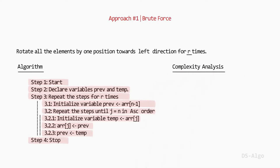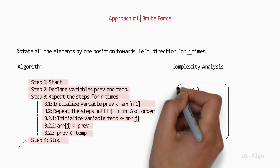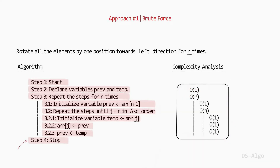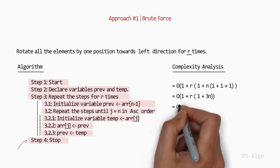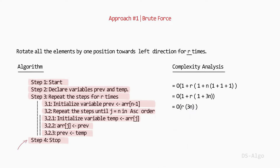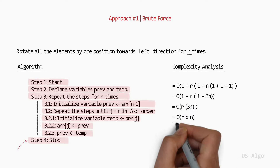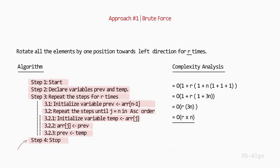Let's find the time complexity of this algorithm. We analyze the time complexity of each step and add them together. Combining the individual steps and dropping the constant time O(1), since 3 is also a constant, the time complexity of this algorithm is O(R × N). For auxiliary space, prev and temp are the only auxiliary variables with fixed space that does not change with increasing inputs. Therefore, auxiliary space is constant, represented as O(1).